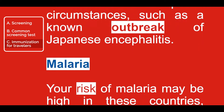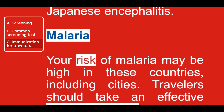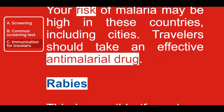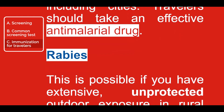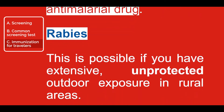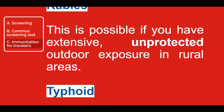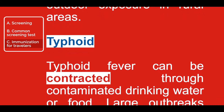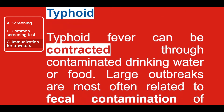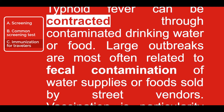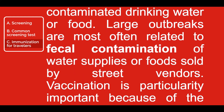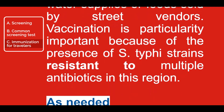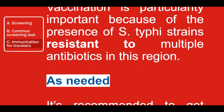Malaria: your risk of malaria may be high in these countries, including cities. Travelers should take an effective anti-malarial drug. Rabies: this is possible if you have extensive unprotected outdoor exposure in rural areas. Typhoid: typhoid fever can be contracted through contaminated drinking water or food. Large outbreaks are most often related to fecal contamination of water supplies or foods sold by street vendors. Vaccination is particularly important because of the presence of S. Typhi strains resistant to multiple antibiotics in this region.